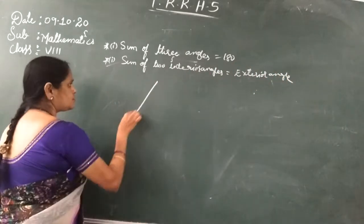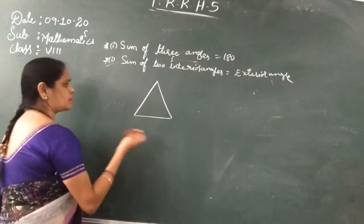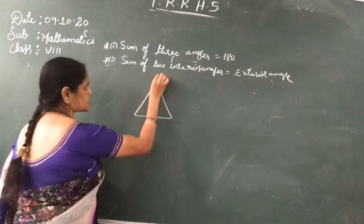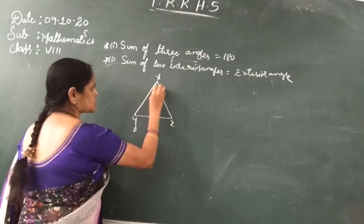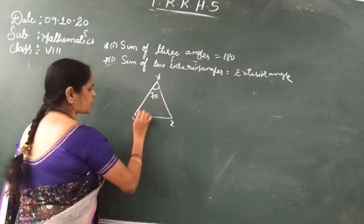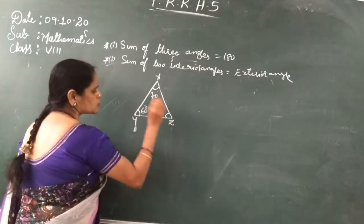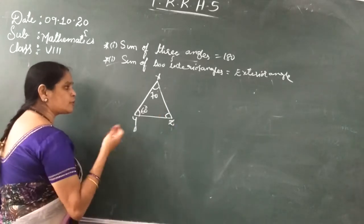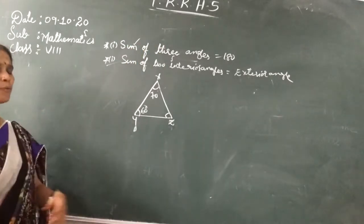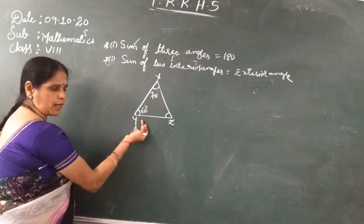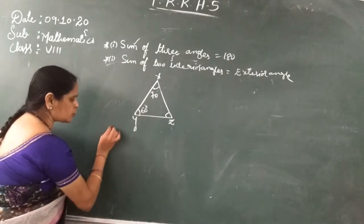So this is the triangle. At this basic level, you know everything. The angles are x, y, and z. Here x is 70 degrees and y is 60 degrees, and z value is not given. So you have to find out the z value. To find it, you have to use the property: sum of three angles is equal to 180 degrees.